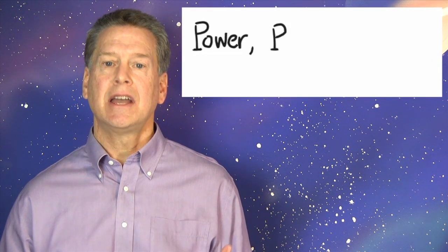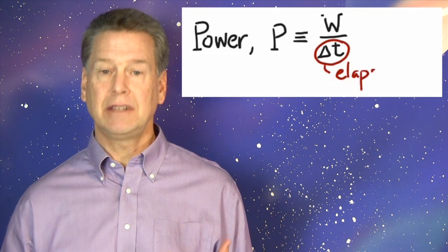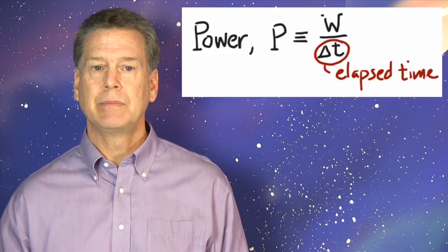Symbolically, capital P is defined as capital W, divided by delta T, the elapsed time. Again, in words, power is the rate of doing work.